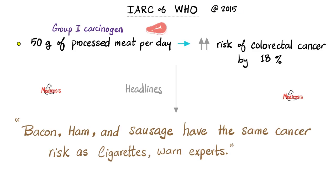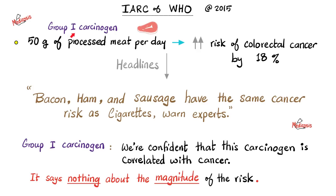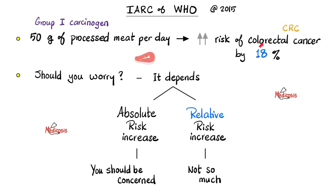In 2015, a panel of the World Health Organization announced that 50 grams of processed meat per day increases the risk of colorectal cancer by 18%. Because rule number one in the news media is what bleeds leads, many journalists confused absolute risk increase with relative risk increase. They are not the same. A group one carcinogen classification means we are confident this is a carcinogen, but it tells you nothing about the magnitude of that risk. Processed meat is not as risky as cigarette smoking — they are not even close. And no, sitting is not the new smoking.